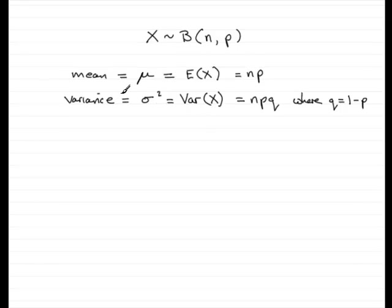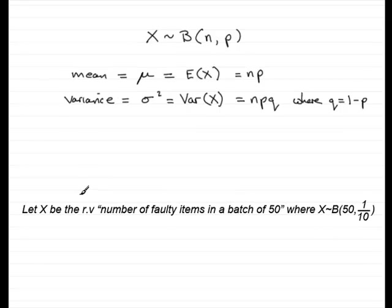I always think that the mean is an obvious result. I mean, for instance, suppose I had 40 items in a batch of 50. The probability that you get a faulty item was, say, 1 in 10, 1 tenth. But I could say, let X be the random variable, number of faulty items in a batch of 50, where X follows a binomial distribution, 50 trials, probability of having a faulty item is 1 tenth.